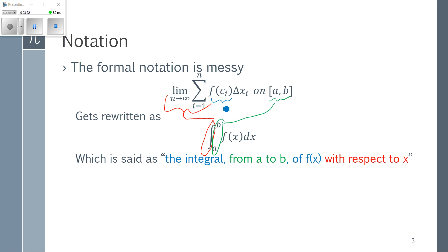We simplify the area of that rectangle by writing the height just as the function, and Δx_i gets rewritten as dx, which goes back to Leibniz notation. This represents a very tiny change in x, because as we go to an infinite number of rectangles the width becomes infinitesimally small, so we switch from Δx to dx. We read this as: the integral from the lower to the upper bound, of the function, with respect to x — for example, the integral from a to b of f(x) with respect to x.